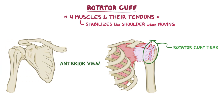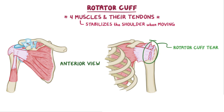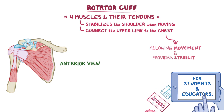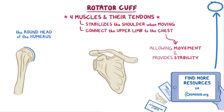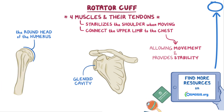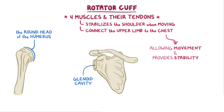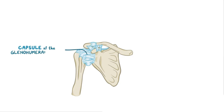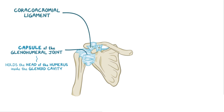The shoulder is a complex of bones, ligaments, muscles, and their tendons that all work together to connect the upper limb to the chest, allowing necessary movement and providing stability. The round head of the humerus fits and rotates inside the shallow glenoid cavity of the scapula. Just above the glenoid cavity, the scapula extends two bony processes — the acromion and the coracoid processes — which serve as attachment for ligaments and muscle tendons. The ligaments of the capsule of the glenohumeral joint hold the head of the humerus inside the glenoid cavity. The coracoacromial ligament forms an arch between the coracoid process and the acromion, and it prevents the head of the humerus from upward dislocation.